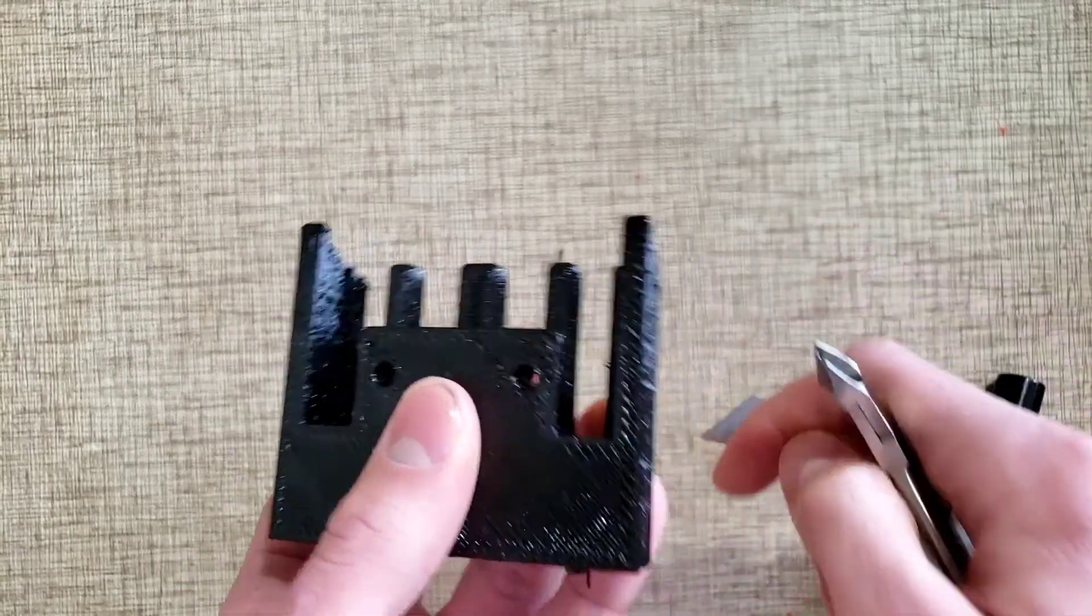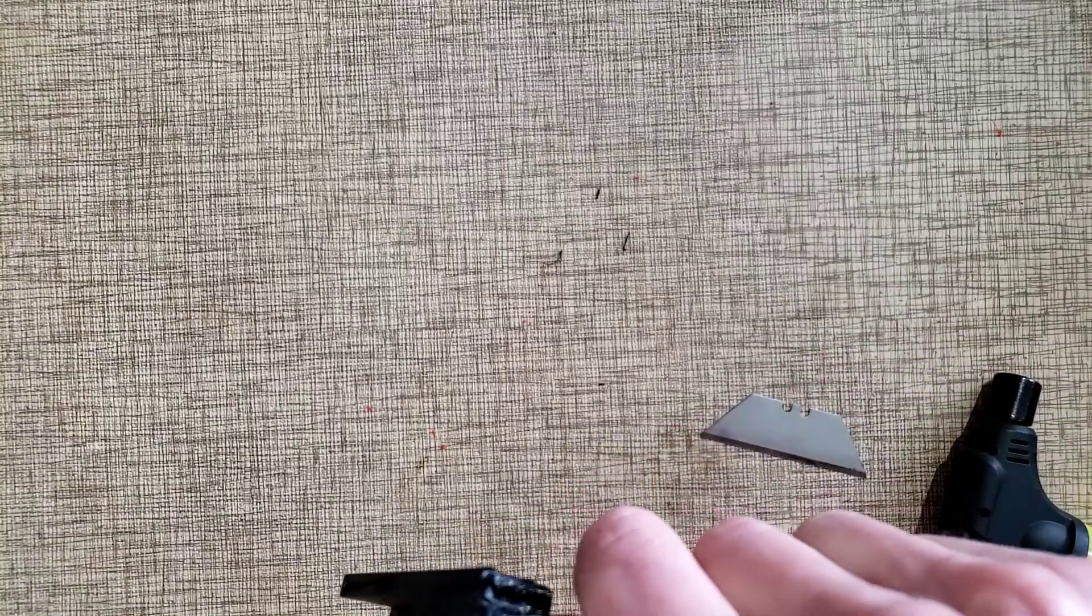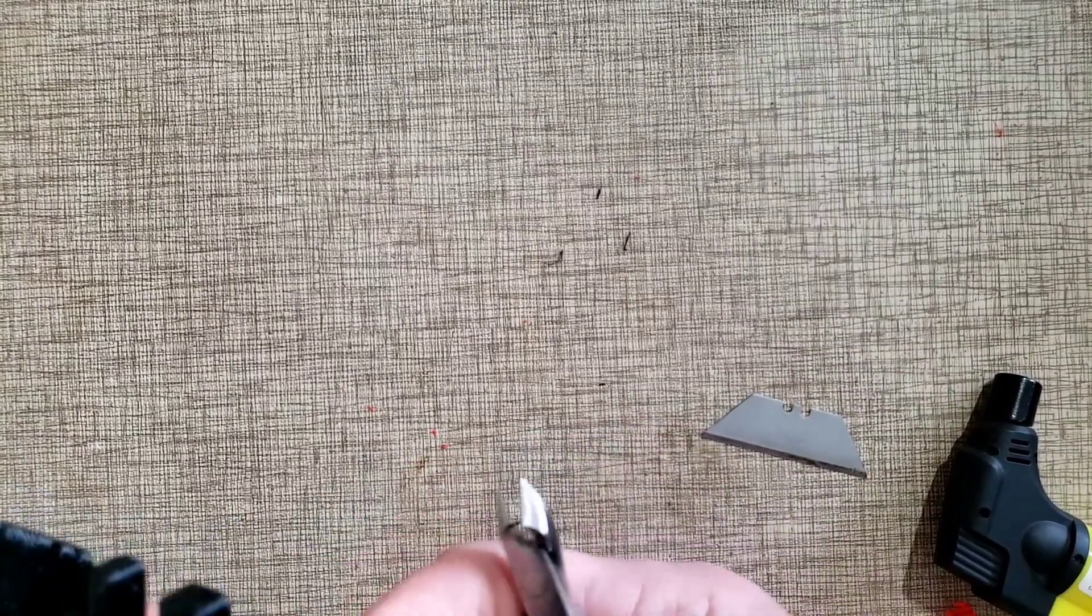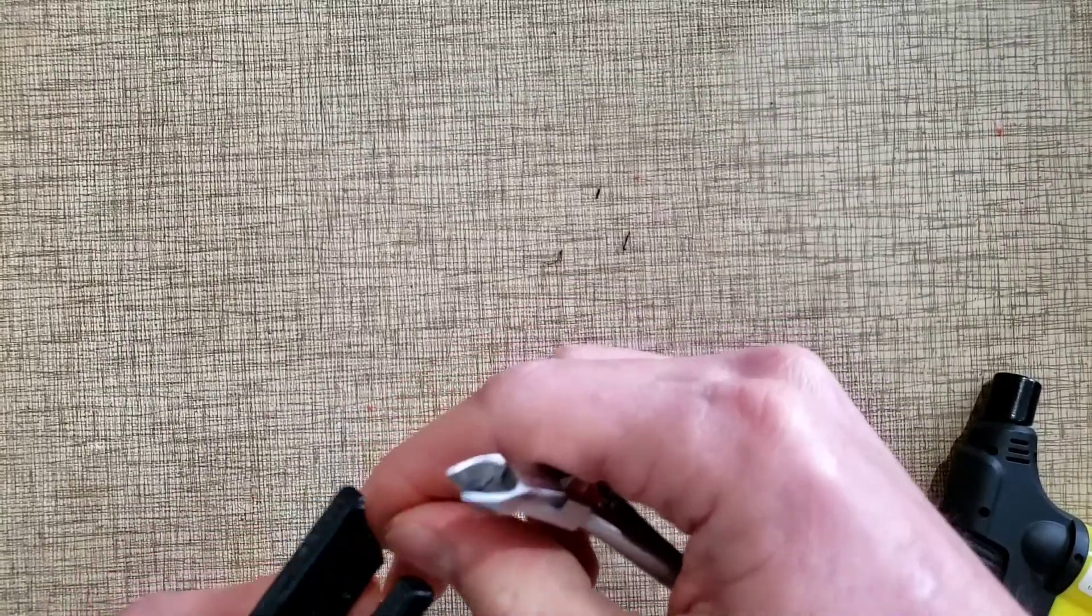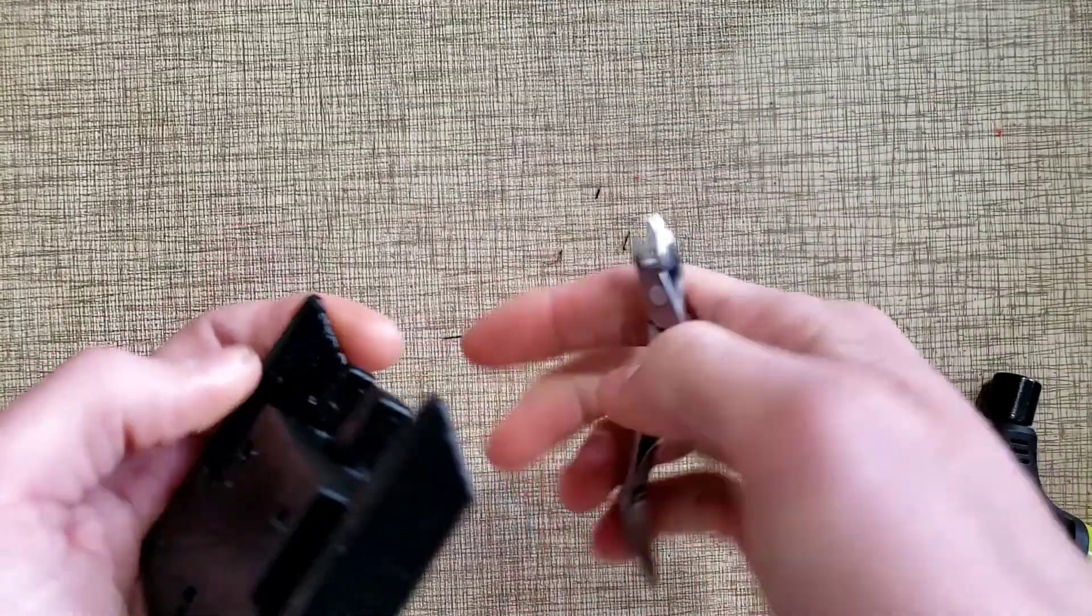So anyway, that's my take on removing supports if you have a printer that only has one nozzle. Of course there are some printers that have dual nozzles and you can buy other filament. I don't remember what it's called, but it's different filament you can use for supports. It's water soluble and that's really nice.